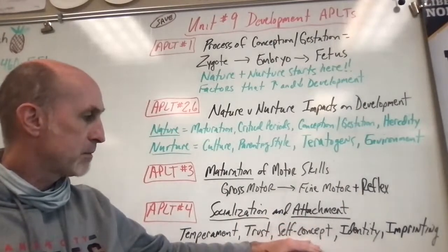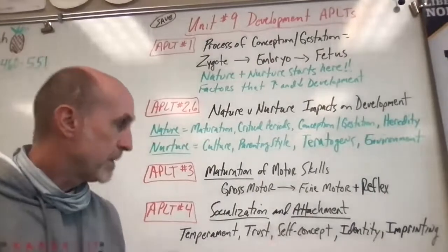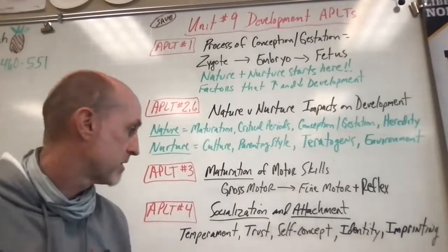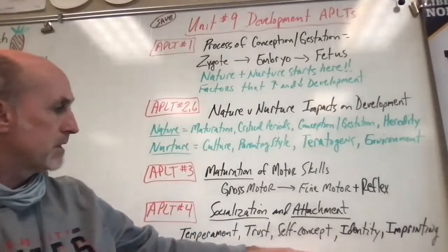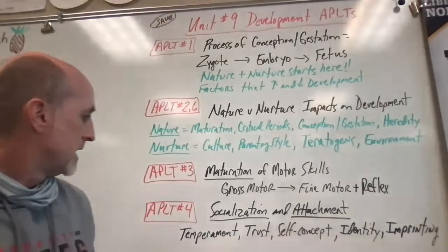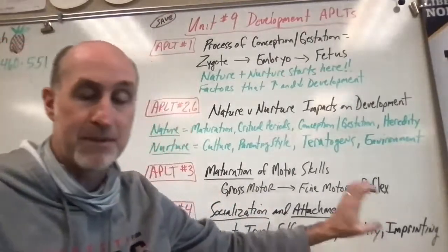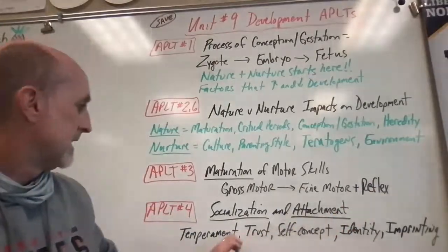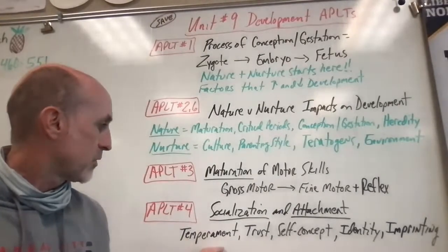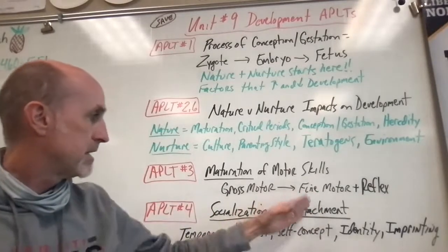We have to develop a self-concept, which is an idea of who we are and our identity, and we have to make sure we are imprinted on our caregivers. You guys are kind of still working on identity and self-concept as adolescents. Imprinting is supposed to happen very early — within the first three months of life. Trust happens within the first year. Temperament you're born with. These are all things that help us develop socialization, of which attachment is a part.